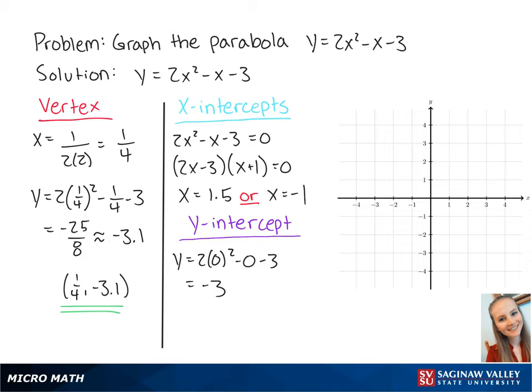Now that we have the intercepts x equals 1.5, negative 1, and y equals negative 3, we can plot the points on the graph. The vertex is at 1 fourth, negative 25 over 8, and the intercepts are at negative 1, 0; 1.5, 0; and 0, negative 3.